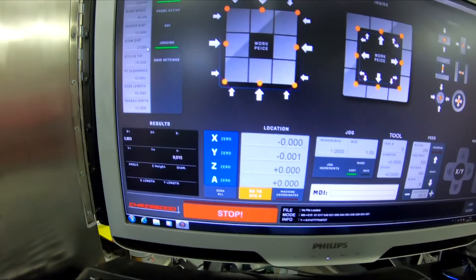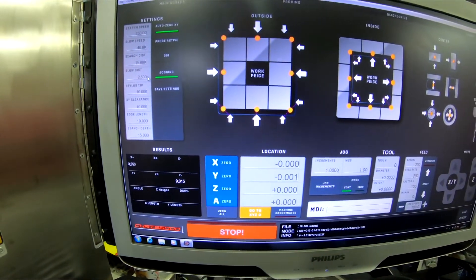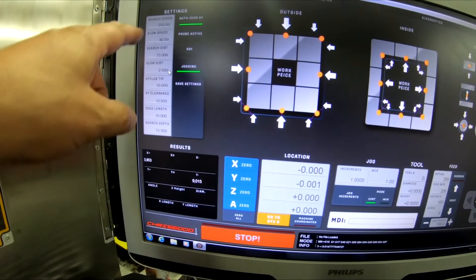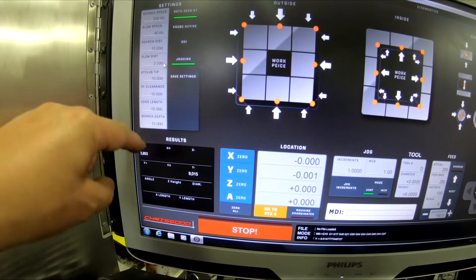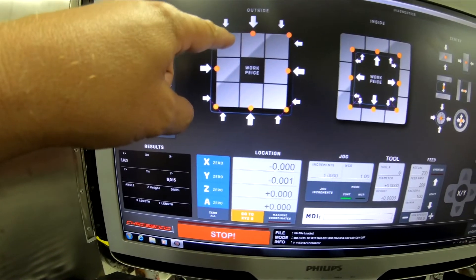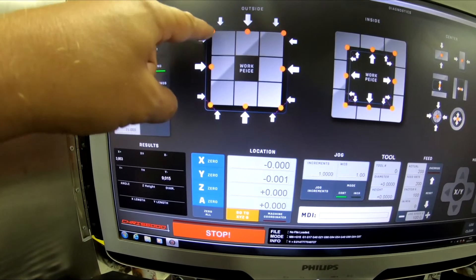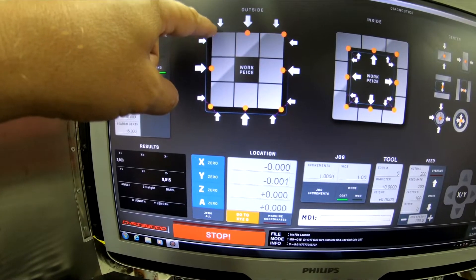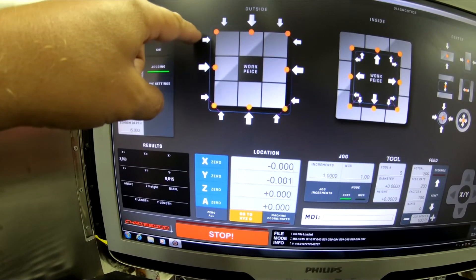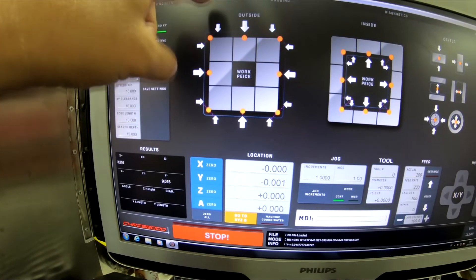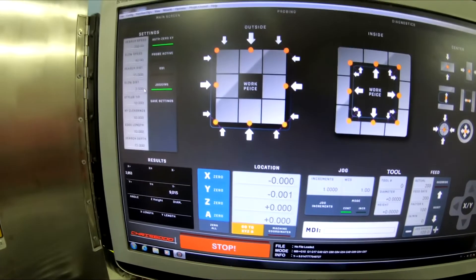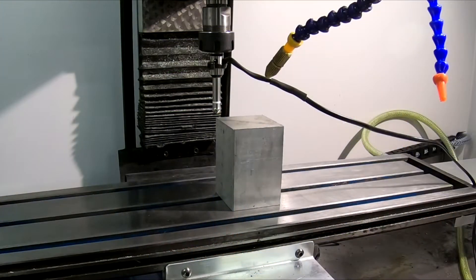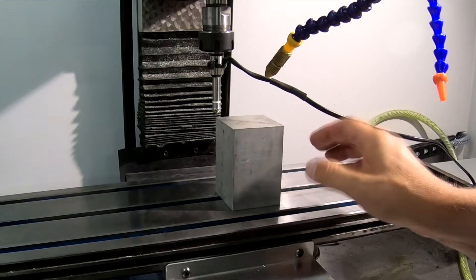I have a macro in Mach3, and I've made all the settings here. We'll try this one, which means you put the probe above the corner and it will automatically set X and Y. I've placed this just over an aluminum block, approximately above the corner. Let's see if it works.